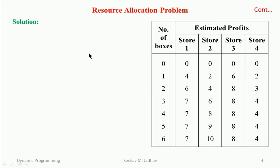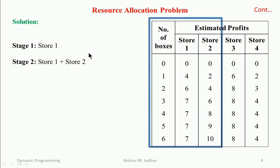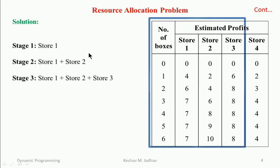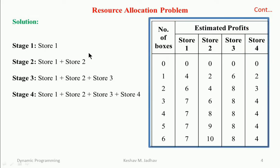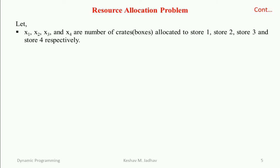To find the solution, first we need to divide this problem into a number of stages. As there are four stores, we can divide this problem into four stages: stage one considers store one; stage two considers store one plus store two; stage three considers stores one, two, and three together; and stage four considers all four stores. Let x1, x2, x3, and x4 be the number of crates allocated to stores one, two, three, and four respectively.